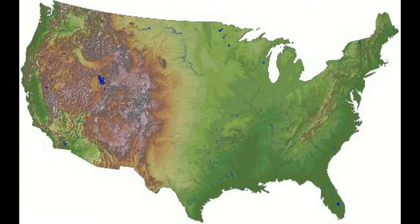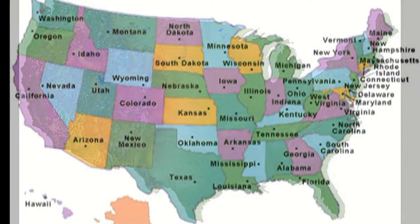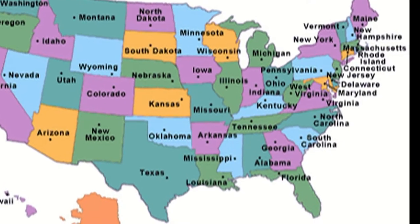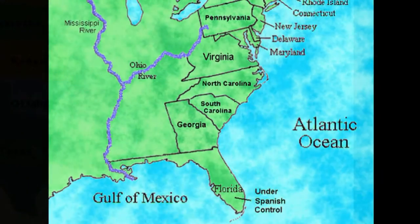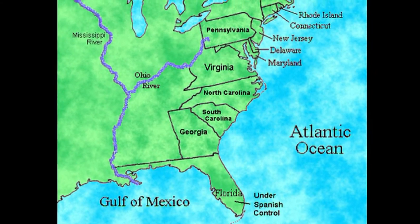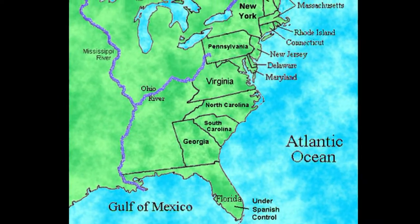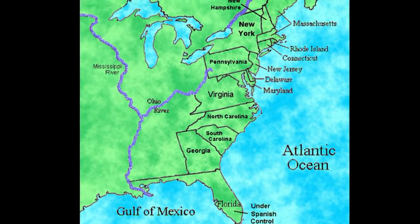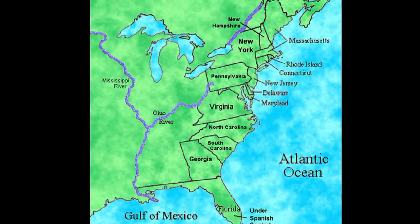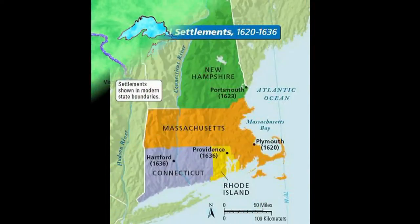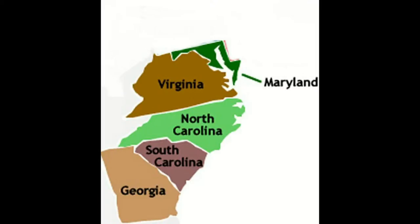The United States of America didn't always have 50 states. It was once made up of 13 colonies, known as the original 13 colonies. The original 13 colonies can be divided into three categories: New England, Middle, and Southern colonies.